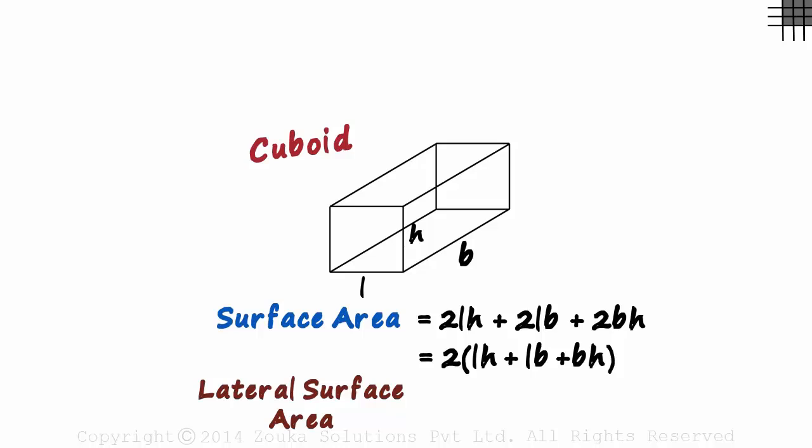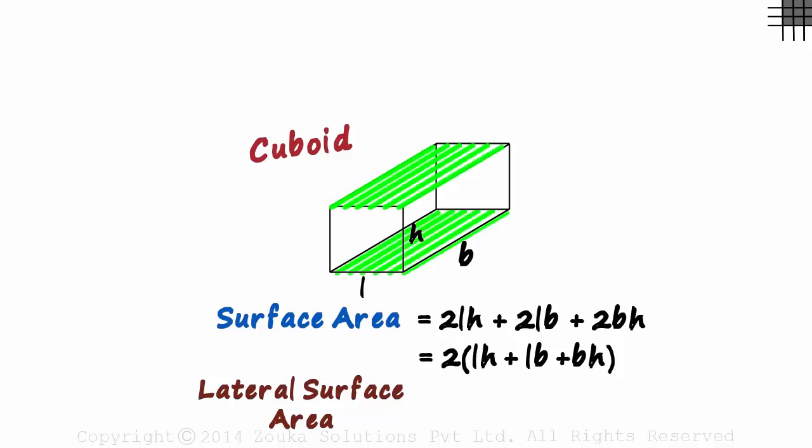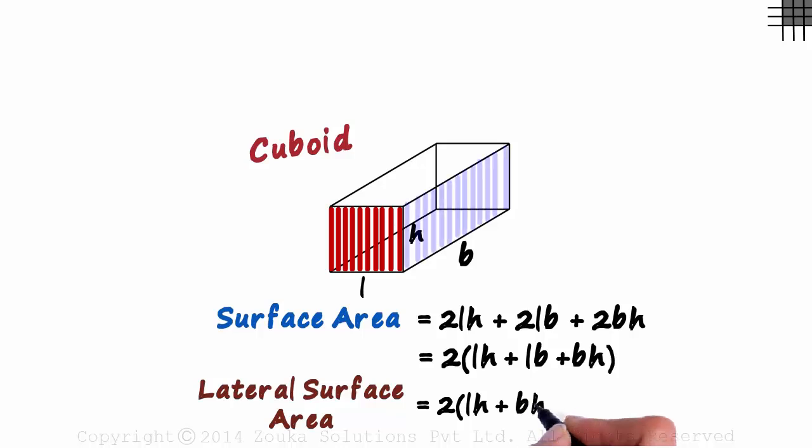What is its lateral surface area then? The word lateral simply means side. This is the sum of the areas of the faces on the side, not the faces at the top or the bottom. So it will just be twice LH plus BH.